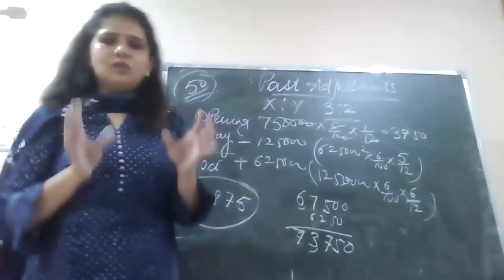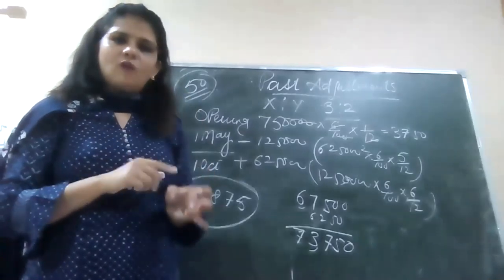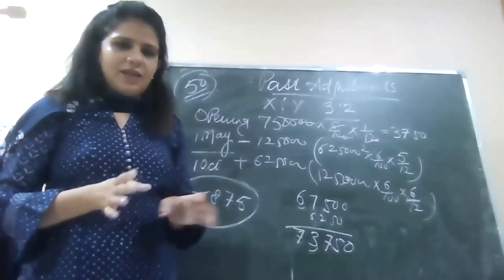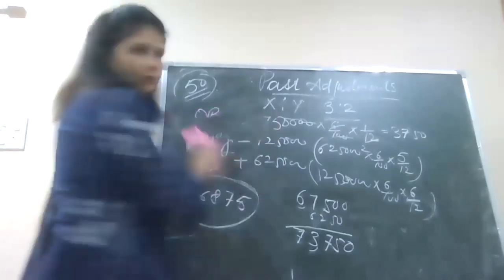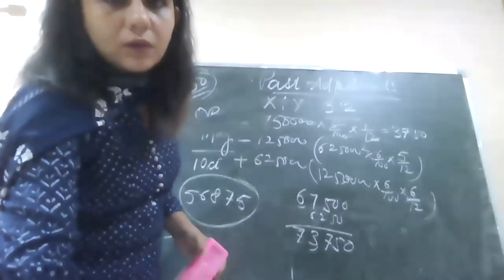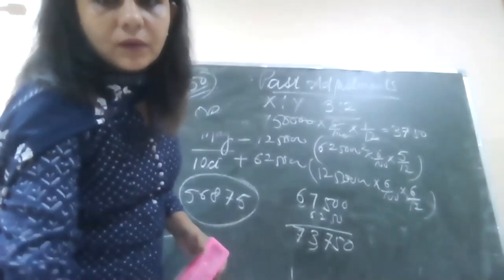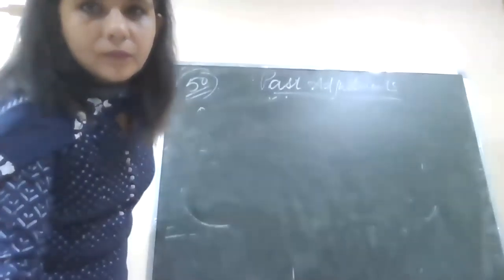We will solve it by past adjustment. Interest on capital is not charged, so let's charge it. Capital is fixed, that's why profit will not come here. Now we will proceed with the analysis table.